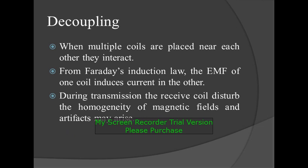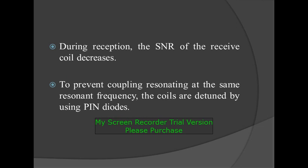Decoupling: when multiple coils are placed near each other, they interact. From Faraday's induction law, the EMF of one coil induces current in the other. During transmission, the receiver coil disturbs the homogeneity of the magnetic field and thus artifacts may arise. During reception, the SNR of the receiver coil decreases. To prevent coupling at the same resonant frequency, the coils are detuned by using a PIN diode.